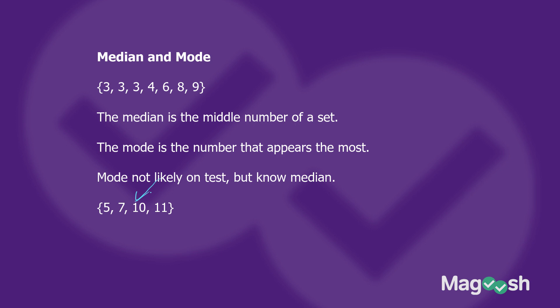There is no middle number here because there's an even number of numbers — four numbers — so you just have 7 and 10 on the inside. Do you pick 7 or do you pick 10? You pick neither. What you want to do is find the average of 7 and 10: add the two numbers together and divide by 2. So 7 plus 10 divided by 2 is 8.5, and therefore the median is 8.5 for those four numbers.